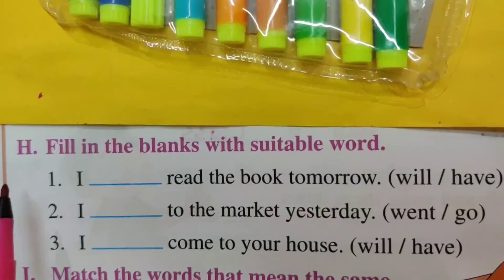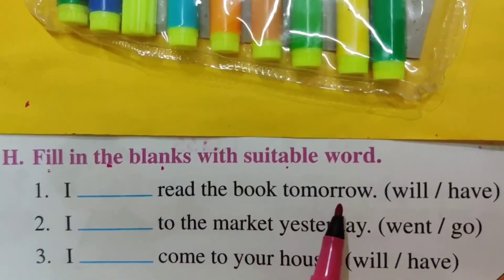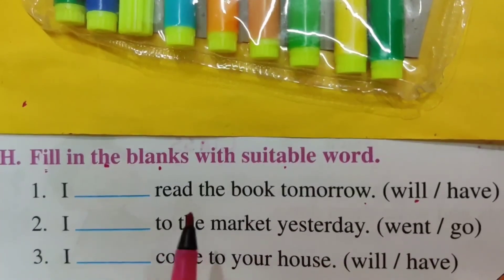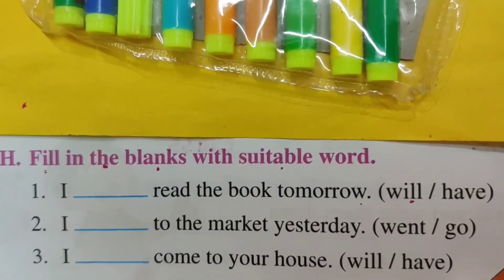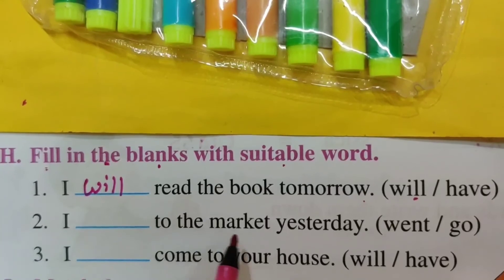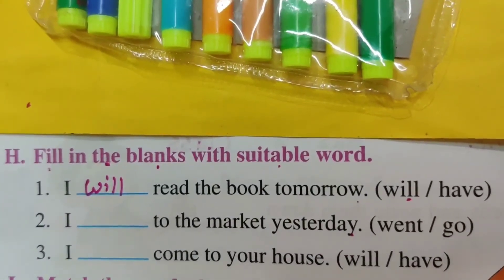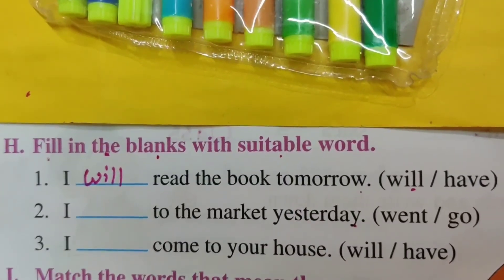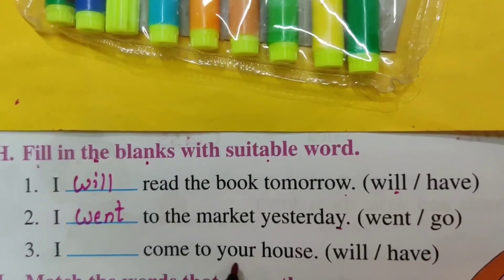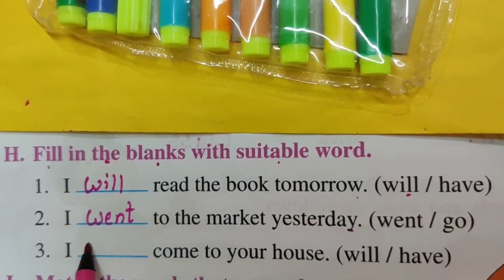Now H-bit: 'Fill in the blanks with suitable words.' First: 'I dash read the book tomorrow.' Tomorrow means future, so the answer is 'will' — W-I-L-L. 'I will read the book tomorrow.' Second: 'I dash the market yesterday.' Yesterday is past tense, so we use 'went.' 'I went to the market yesterday.' Third: 'I dash come to your house.' That also needs 'will' — it is future tense. 'I will come to your house.'